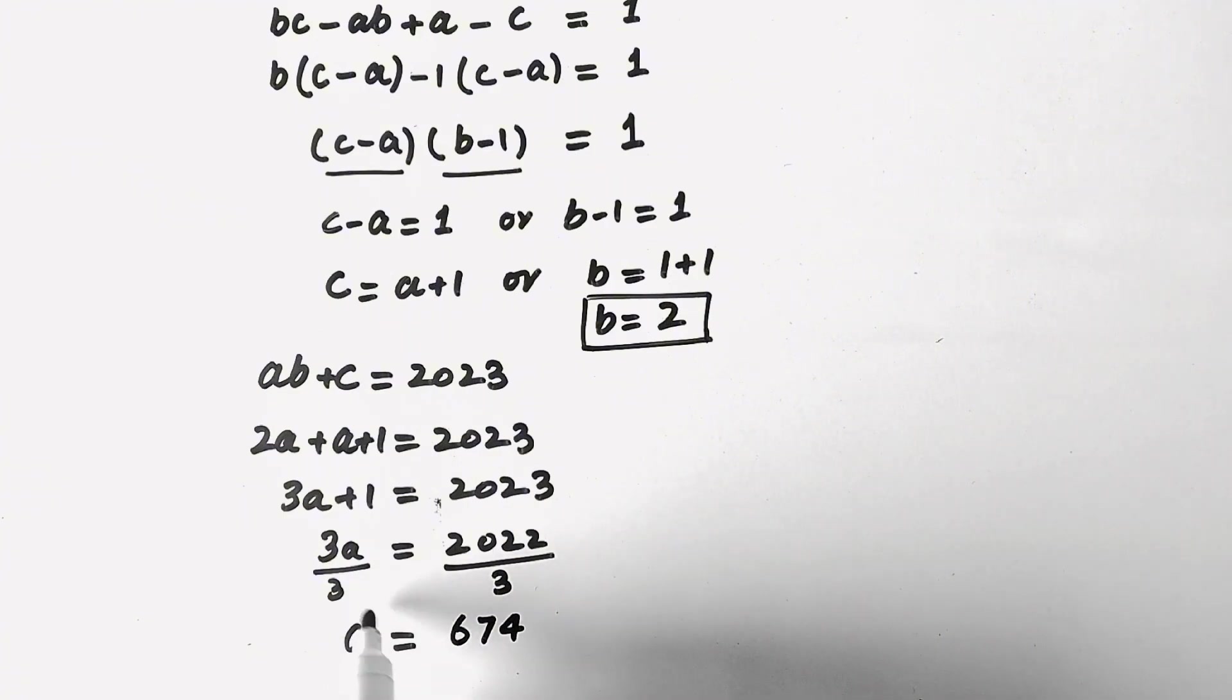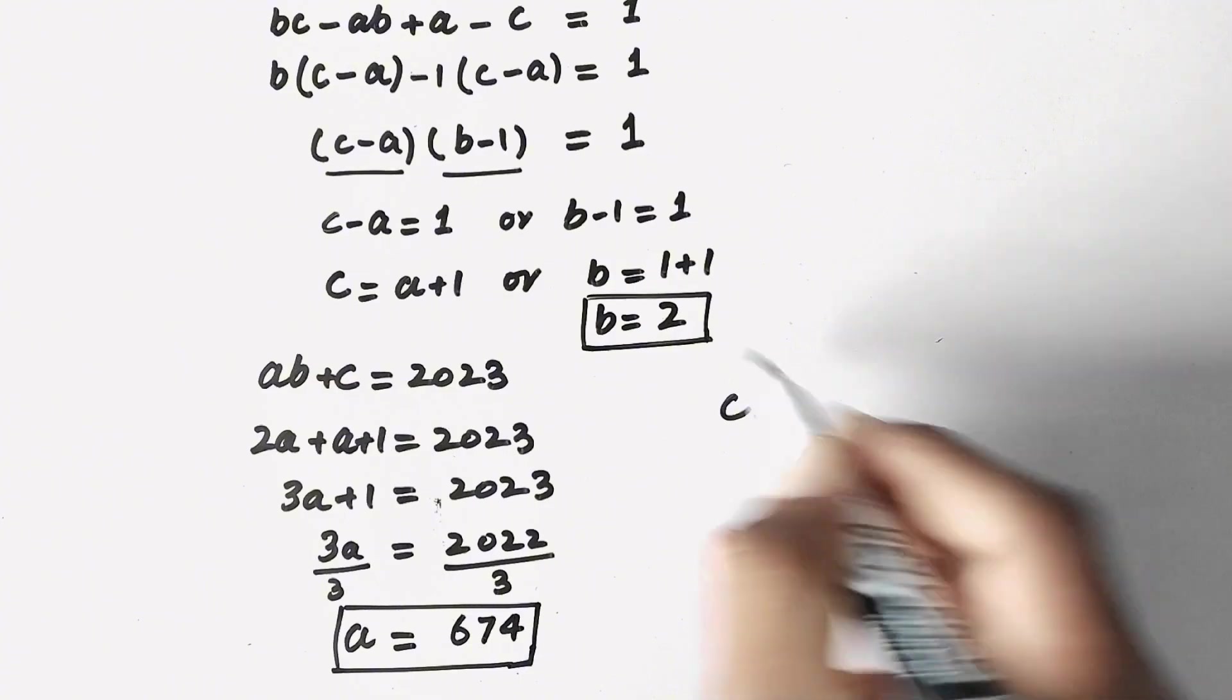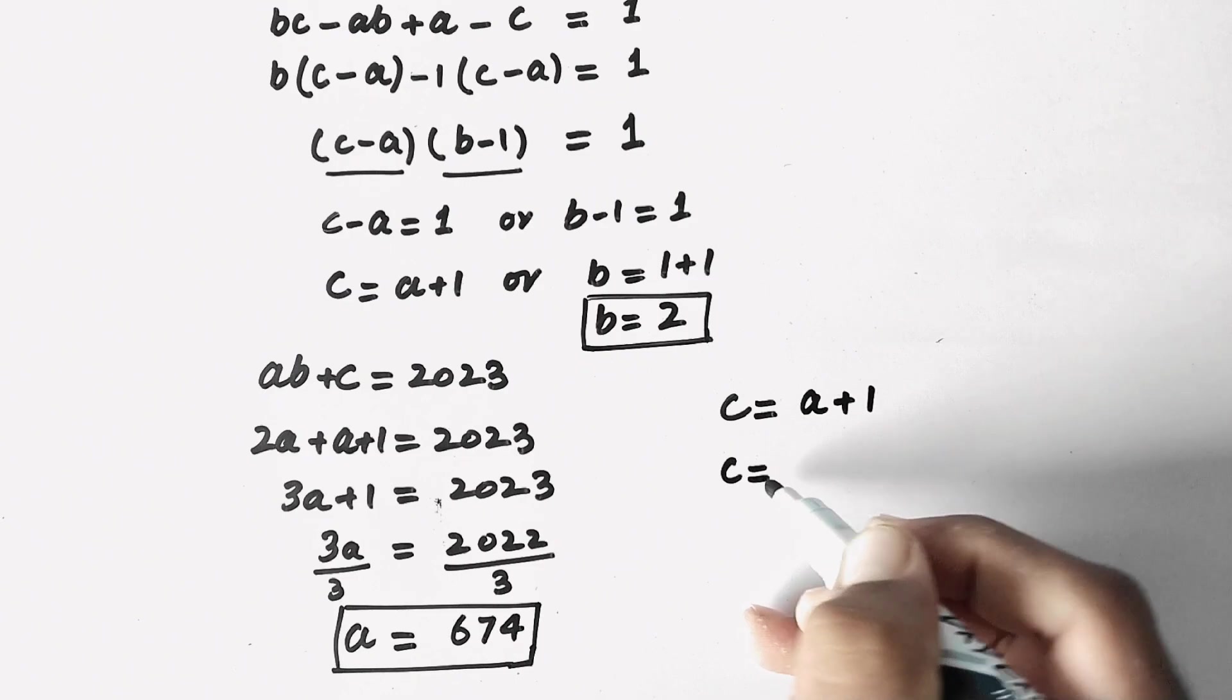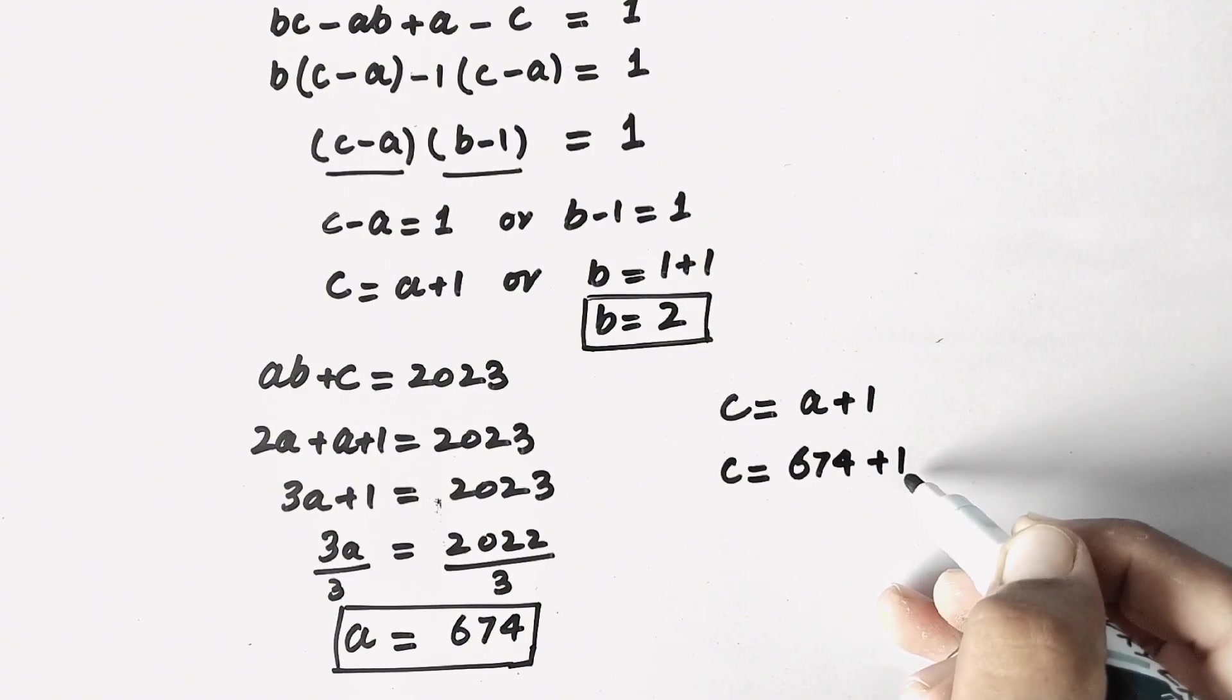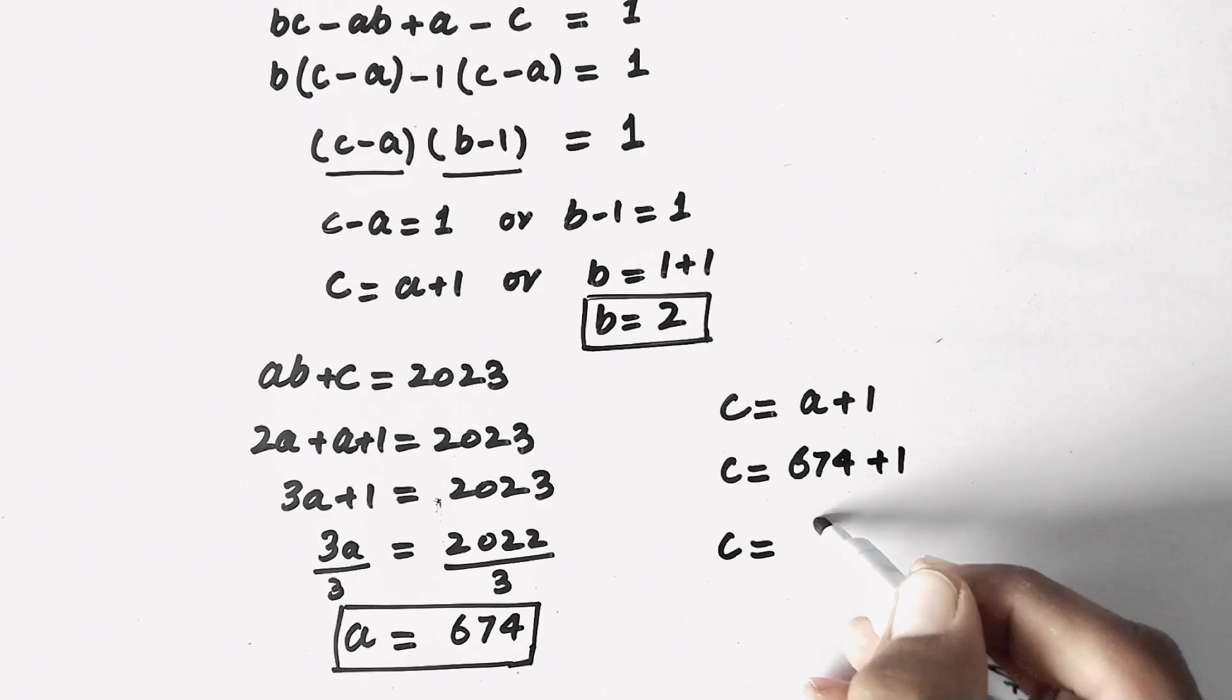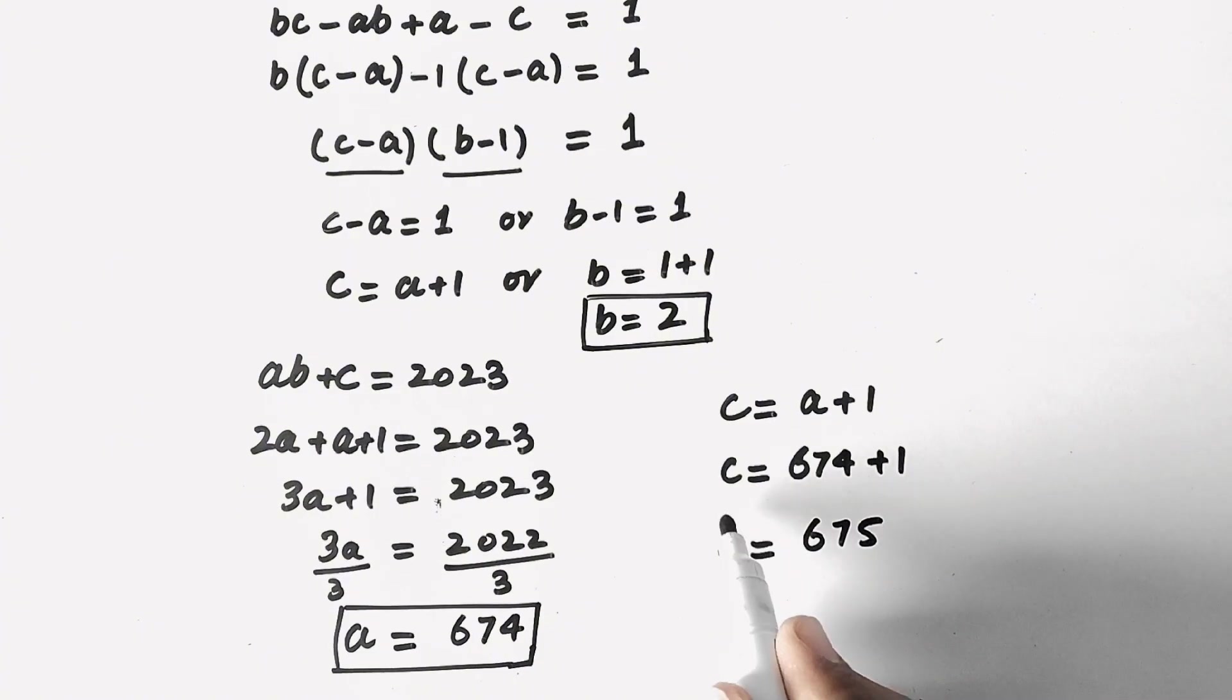That is the value of A. And since C is equal to A plus 1, C will be equal to 674 plus 1. So here we will get C equal to 675. So here we have gotten the value of C.